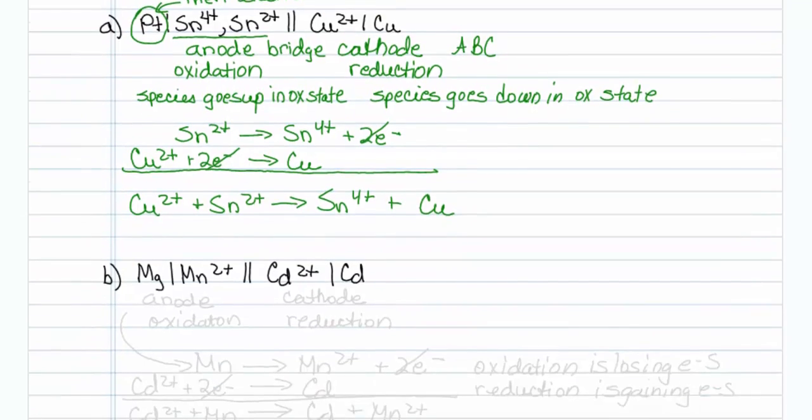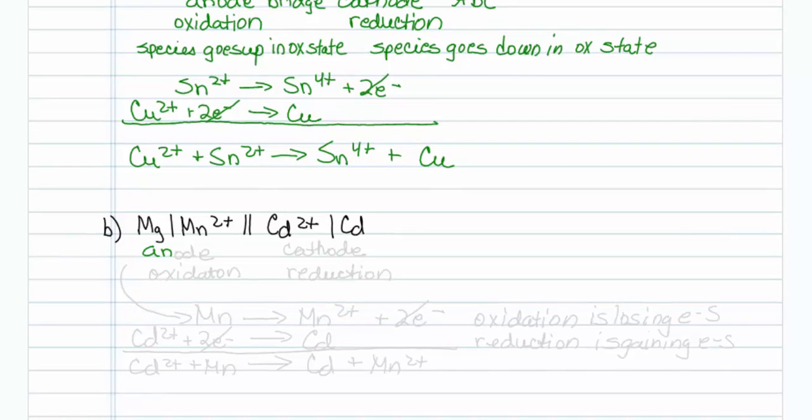Let's look at B. Once again, it is anode and oxidation, cathode and reduction. So I know my first reaction is going to have to be an oxidation, so it is going to be Mn going to manganese 2 plus plus two electrons.